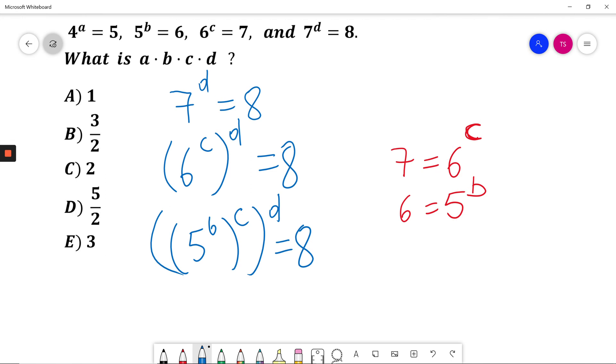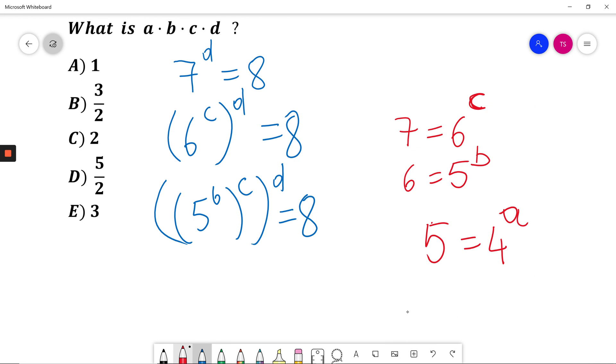Now I also know that 5 is equal to 4 to power of A. I will substitute that, giving us 4 to the power of A to the power of B to the power of C to the power of D equals 8.